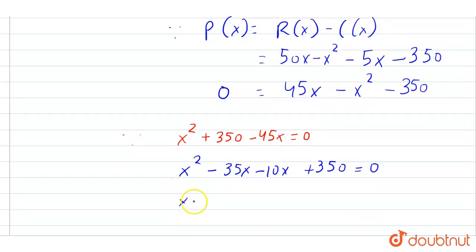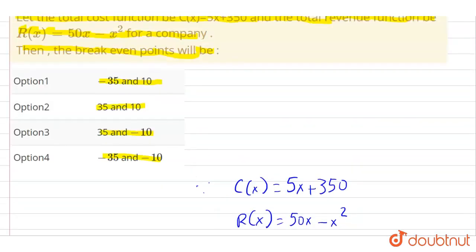So this will be x squared minus 35x minus 10x plus 350, which will be equals to 0. Now from here, if we take x common, so this will be x minus 35. From here, if we take minus 10 common, it will be remaining x minus 35, which equals 0. So from here, we can find the value of x that is 35 or x equals 10. So we find the values of x that is x equals 35 and 10.